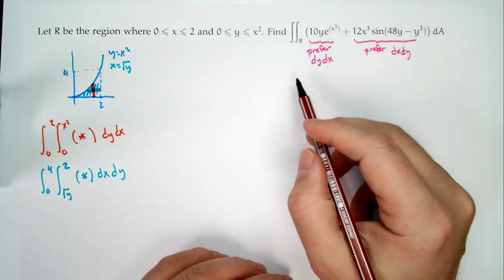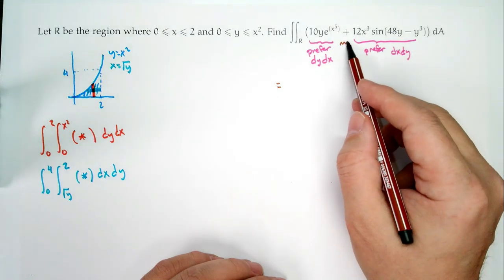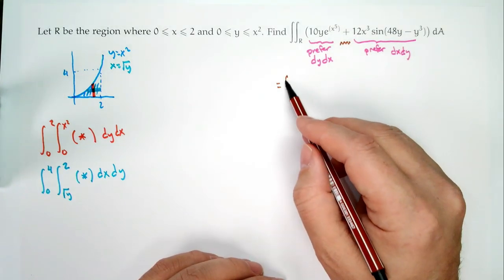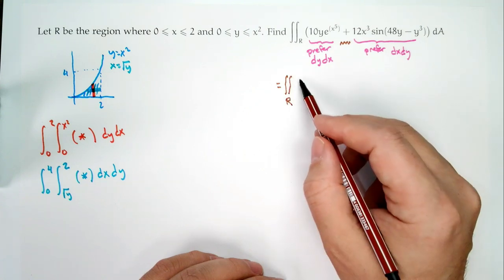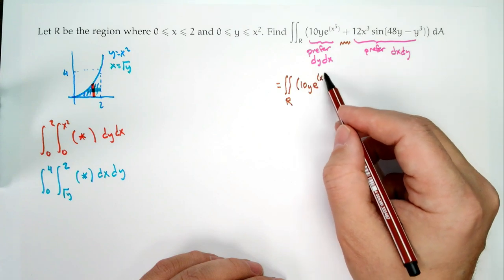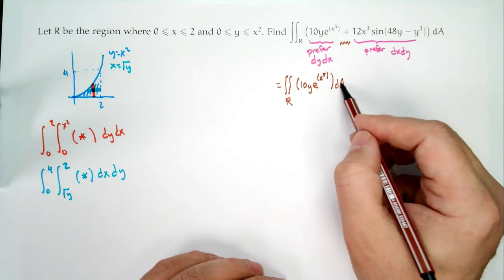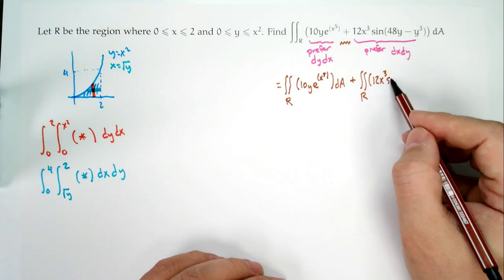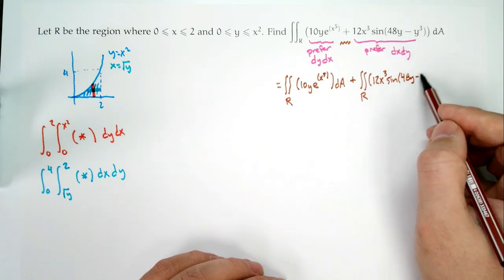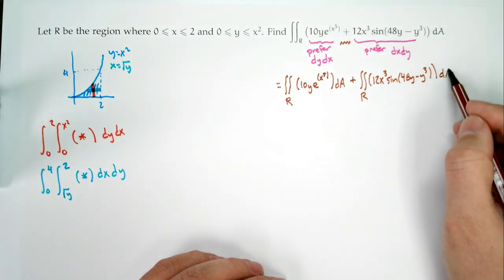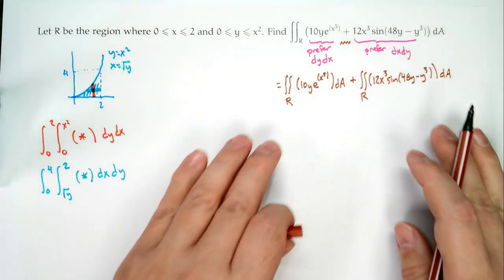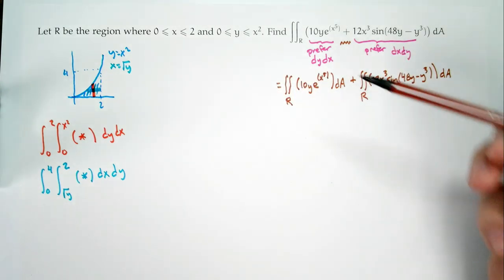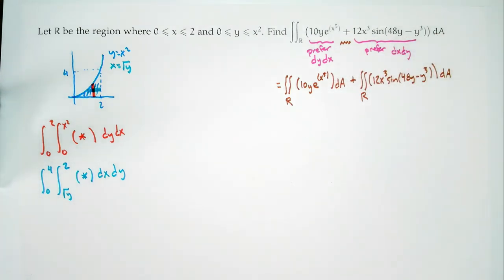Remember, integrals can be broken up over addition. So this is the same as the integral over R of 10y·e^(x⁵) dA, plus the integral over R of 12x³·sin(48y − y³) dA. We can break our one integral into two parts — for each part, there's a preferred way to do it. You always want to make things happy: go with their preferred way.